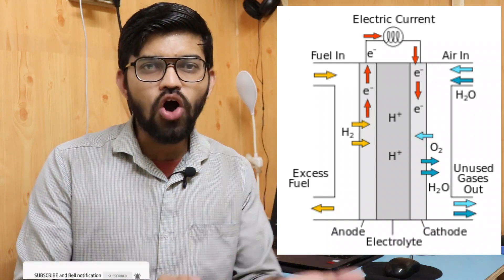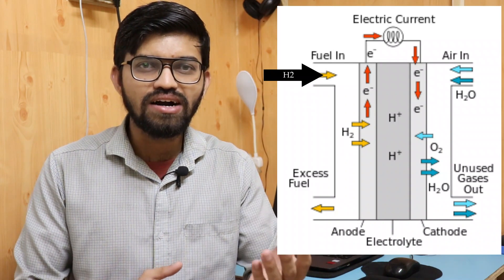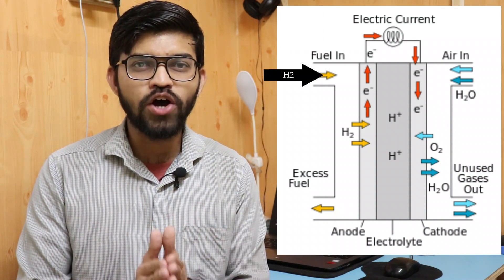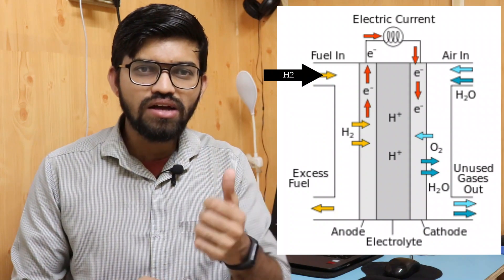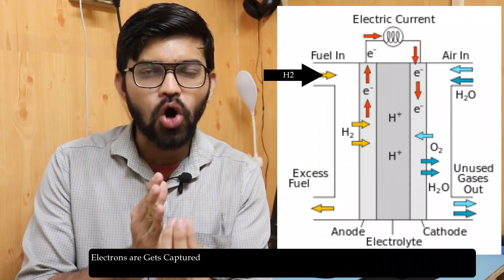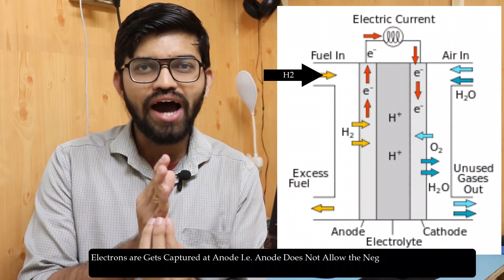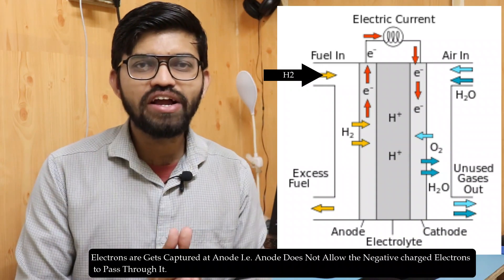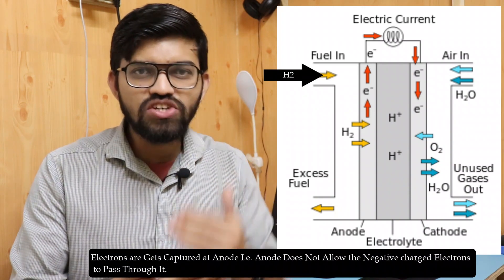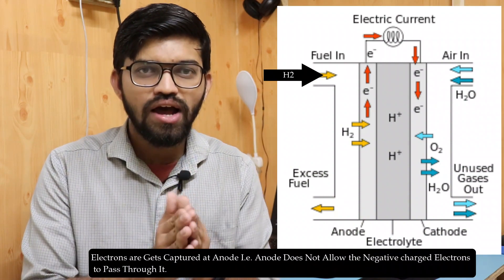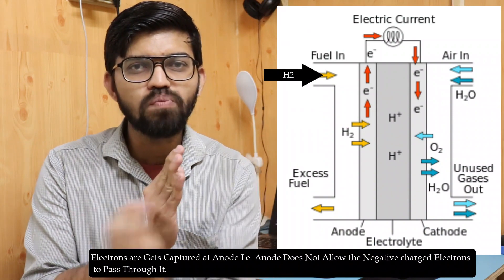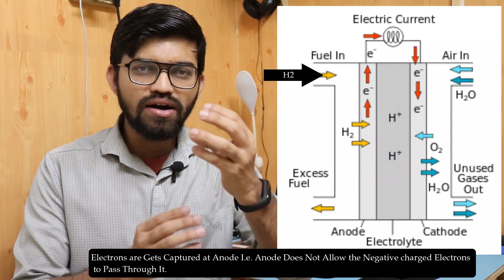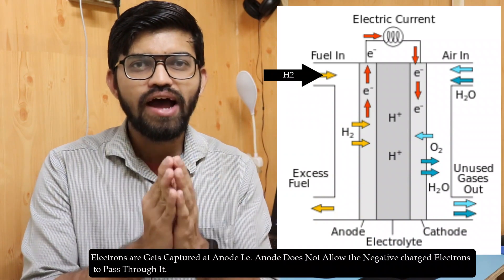When hydrogen gas is passed through the anode, a chemical reaction occurs at the anode. The electrons of the hydrogen molecules are captured at the anode, while the protons of the hydrogen atoms are allowed to pass through the electrolytic membrane towards the cathode. So at the anode, negatively charged electrons are captured, and only the positively charged protons are allowed to pass through the membrane towards the cathode.